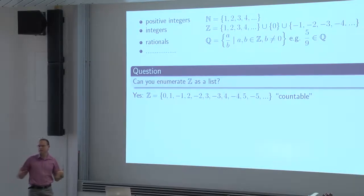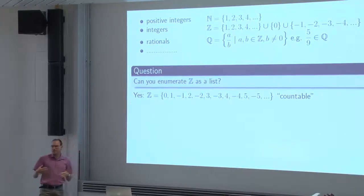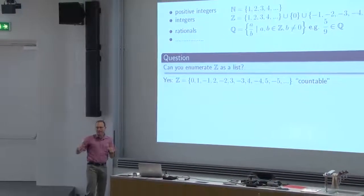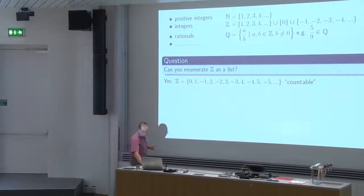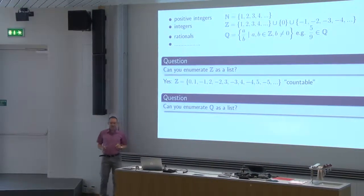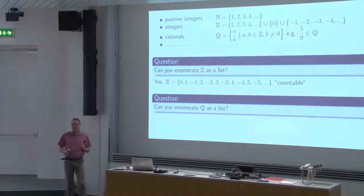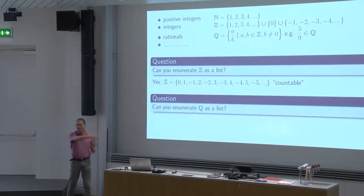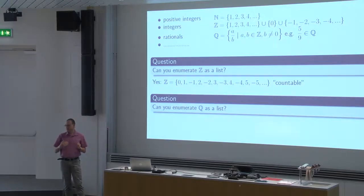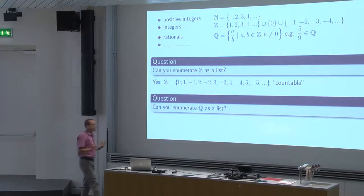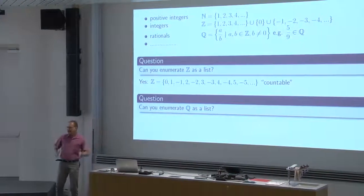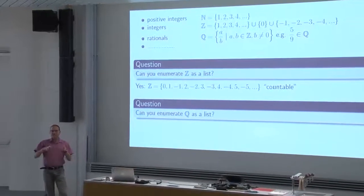Countable means you can enumerate them as an infinite list as we have shown here. You can design this mental experiment where you put one integer in this box every day and every integer appears at some point. Next question: can you do the same with the rational numbers? Can you list all the rational numbers as an infinite sequence, starting with the first element, second element, third element, and so on, so that every rational number appears in the list?